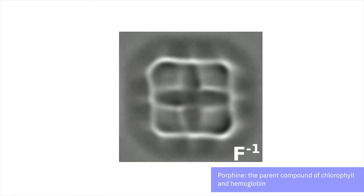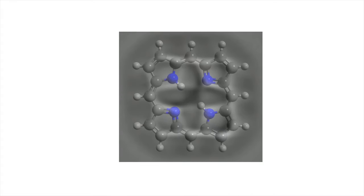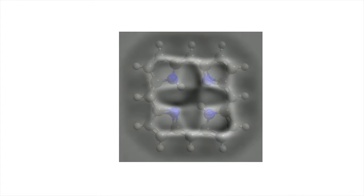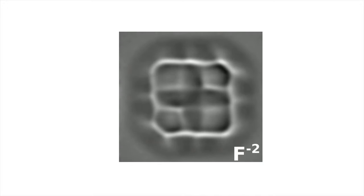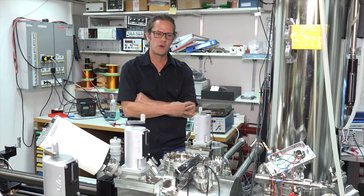Here you have porphine, the parent compound of hemoglobin and chlorophyll. And here you see it in three different charge states: the neutral, with one attached electron, and with two attached electrons.